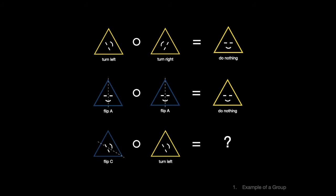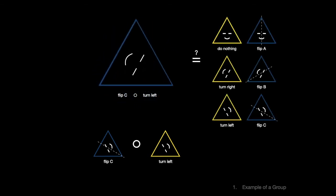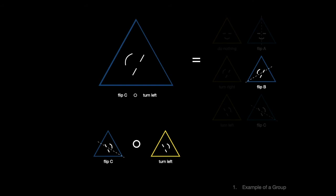It's a bit hard to visualize in your head, so here's an animation. We'll perform these two operations on this triangle and see what happens. First, we'll perform flip C. Then compose that with a left turn. Can you find the match? Here it is, flip B.